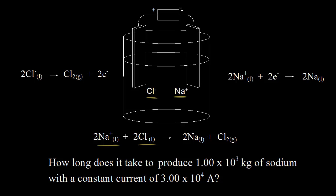In an electrolytic cell, the negative terminal of the battery delivers electrons — in this case, to the electrode on the right. When those liquid sodium ions come in contact with those electrons, we get a reduction half-reaction. Sodium ions gain electrons and are reduced to form liquid sodium metal, which forms at the cathode, since reduction occurs at the cathode.